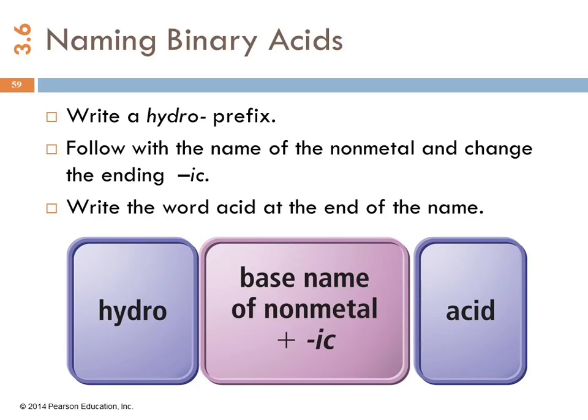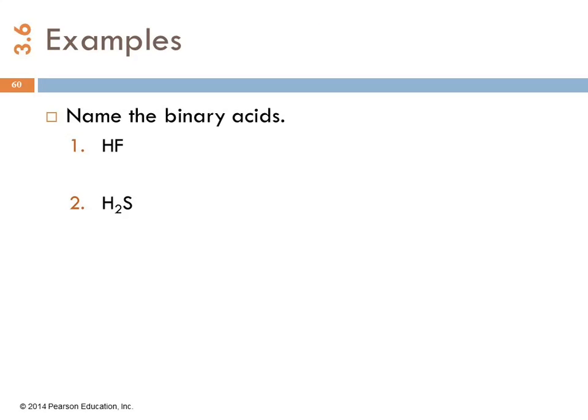Naming the binary acids, the not oxy acids, follows this pattern: hydro, the base name of the nonmetal with the ending changed to -ic, a little space, and then the word acid. So hydro's the prefix. You follow it with the name, and you have the word acid at the end. Let's practice that.